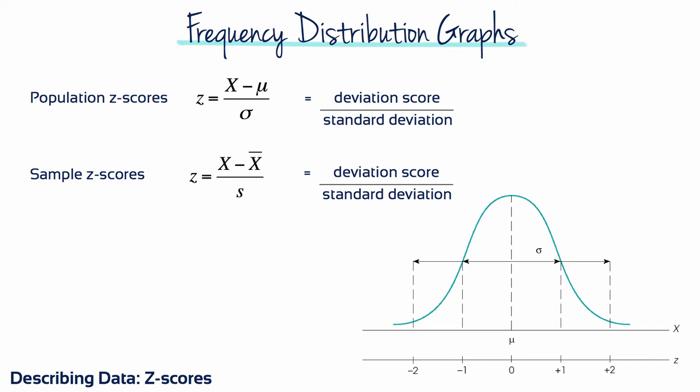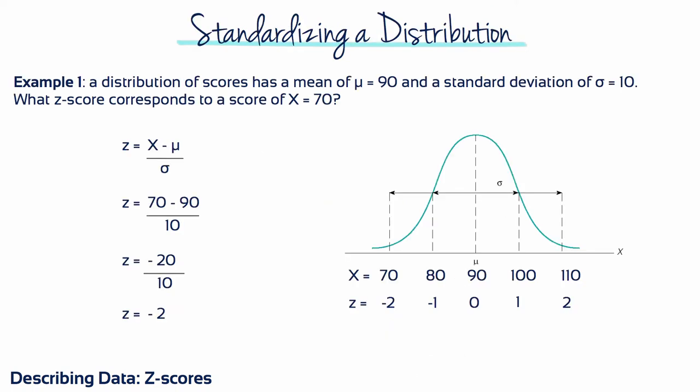Let's run through three quick examples. Example 1: A distribution of scores has a mean of 90 and a standard deviation of 10. What z-score corresponds to a score of x equals 70? 70 minus 90 divided by 10 equals a z-score of minus 2.